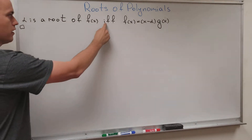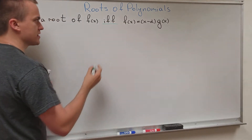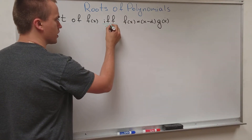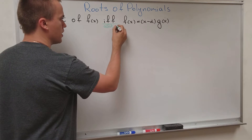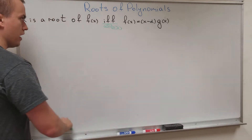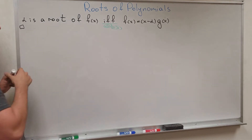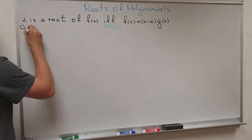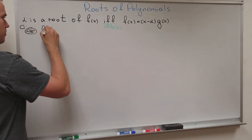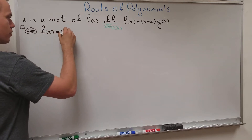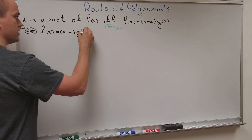We know that if we have an if-and-only-if statement, it means we need to prove two directions — a sufficient condition and a necessary condition. The sufficient condition is really straightforward. So what is the sufficient condition? I have that f(x) is written in the form (x minus alpha) times g(x).